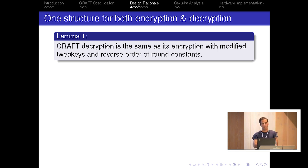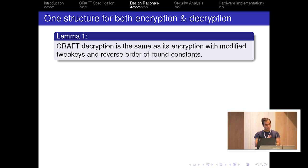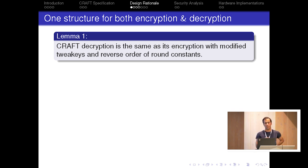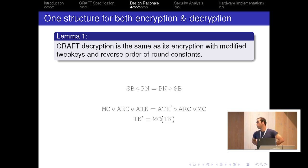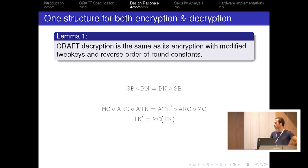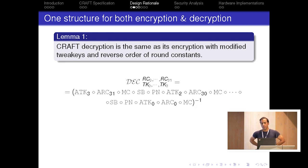Briefly, from all the options we had, we chose the ones that are efficient in concurrent error detection constructions. We also wanted them to be involutions to provide a decryption structure in the same structure as encryption with small modifications. By modifying the tweakey and reversing the order of round constants, decryption of CRAFT is the same as its encryption.